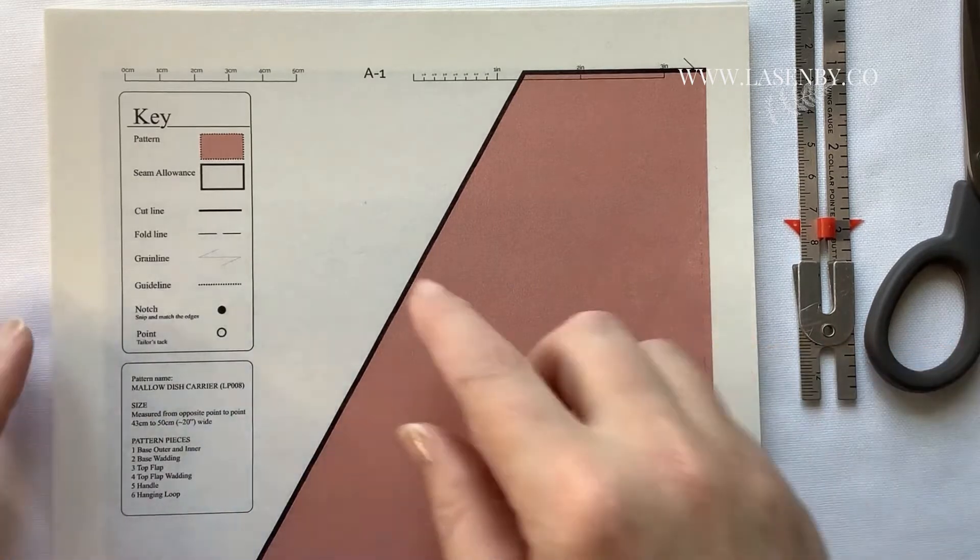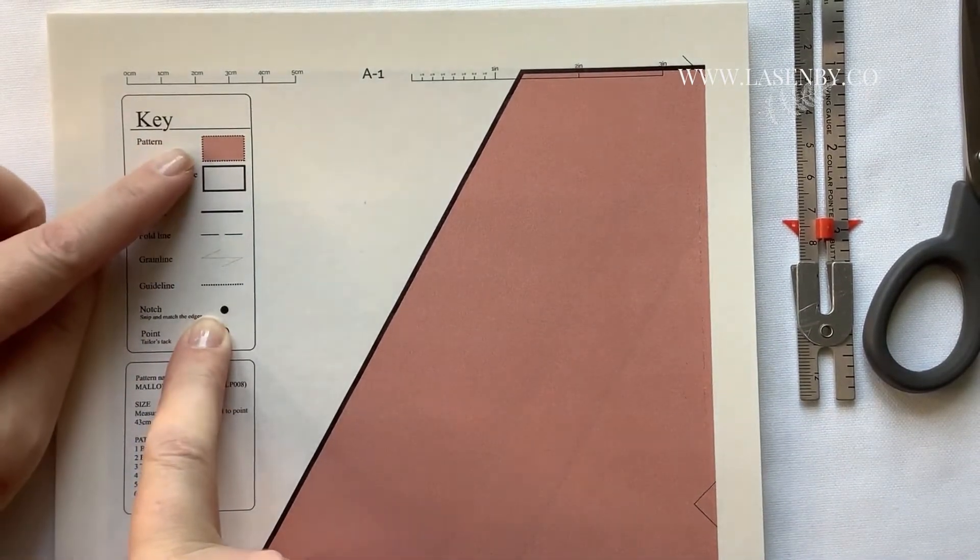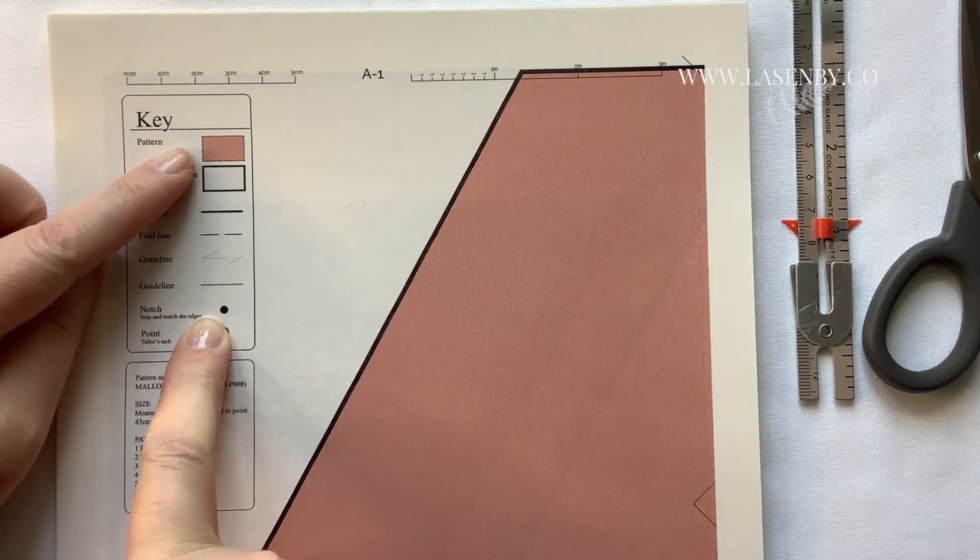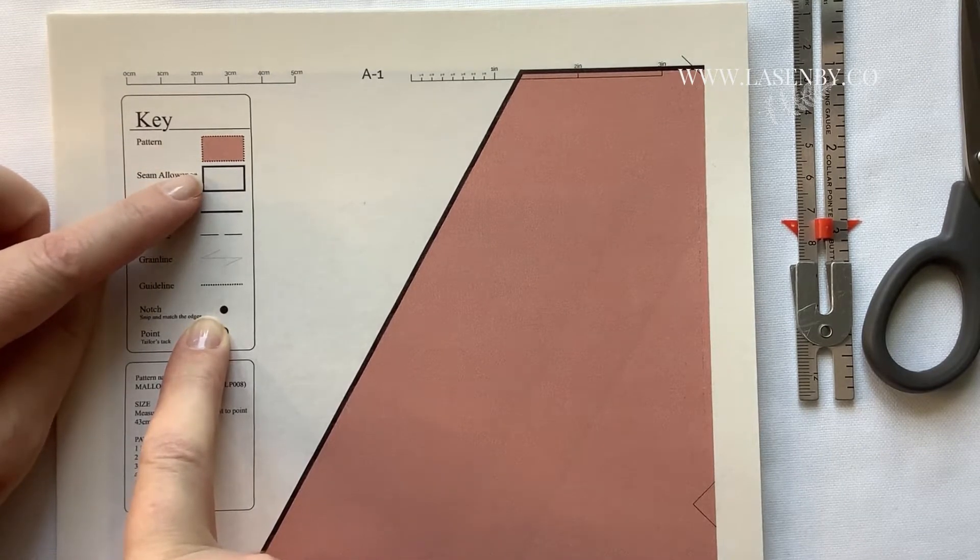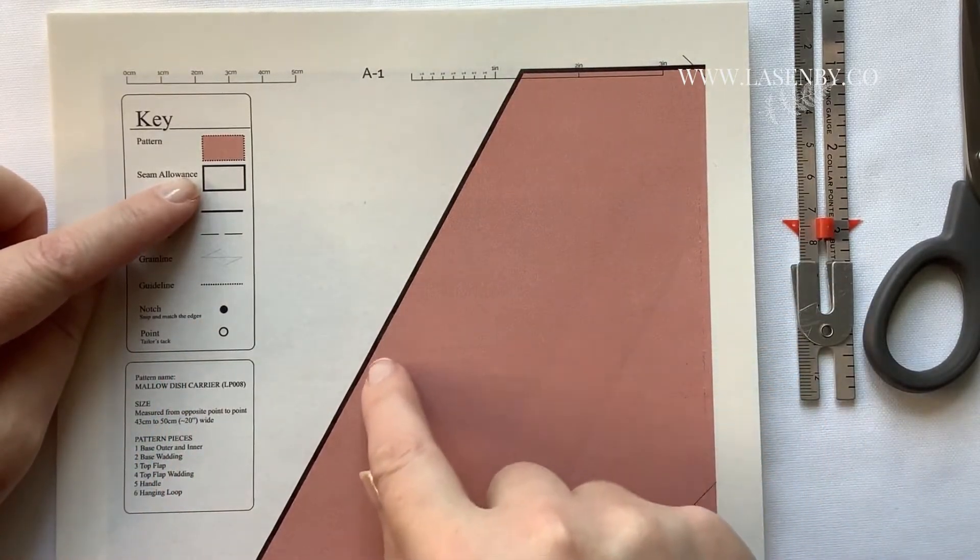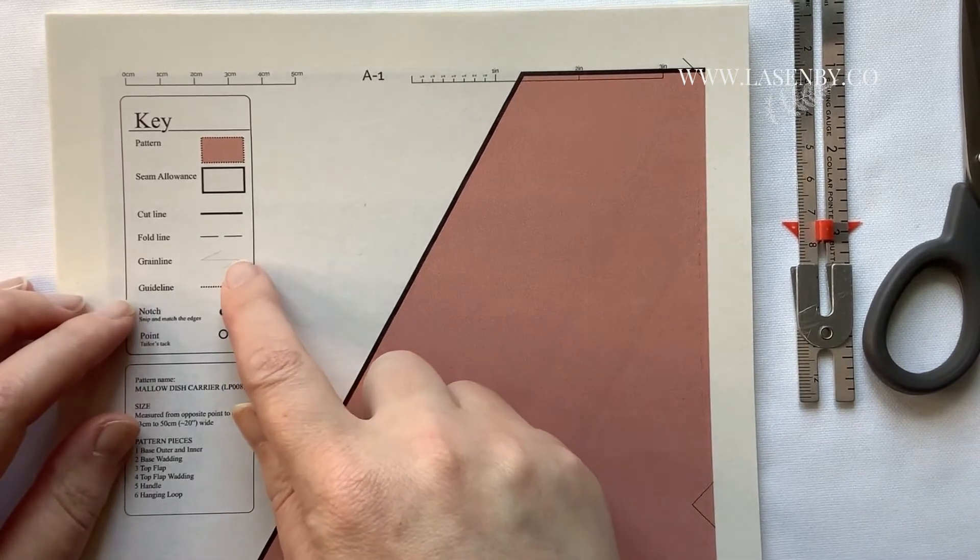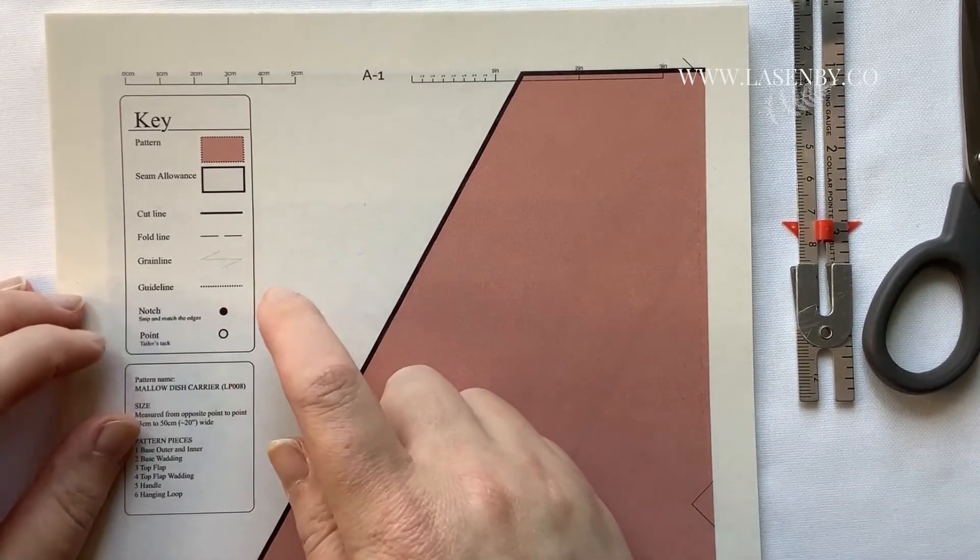So let me show you what's on here. We have the pattern key and the dotted line is for the actual stitching line. The black line is the cut out line, so that's where you cut outside the black line just on the outer edge. And then we've got a fold line, a grain line and a guide line.